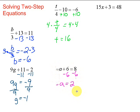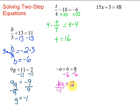Now we're not done yet — our variable is not by itself, it still has that negative there. If we have just a variable, the number 1 is always in front of it; the coefficient of a variable by itself is 1. So this is really a negative 1 sitting here. This works the same way as when we had 9 times g and divided by 9 — here we have negative 1 times a, so to get rid of it we divide by negative 1 on both sides. Those cancel out, and we get a equals 2 divided by negative 1, which gives us negative 2.